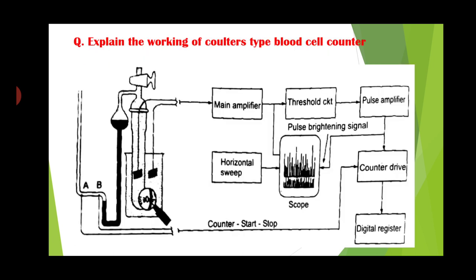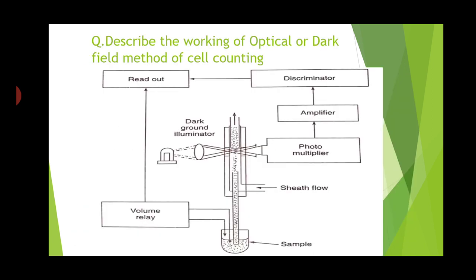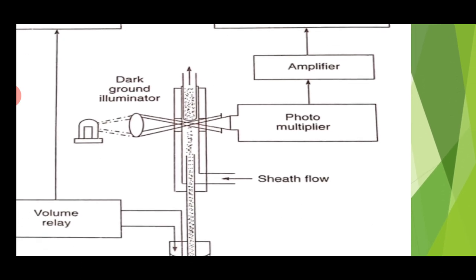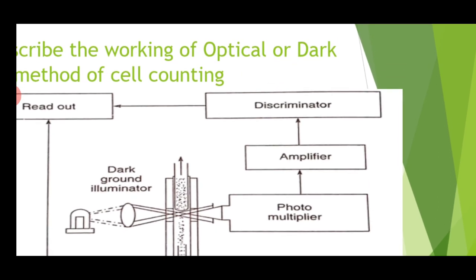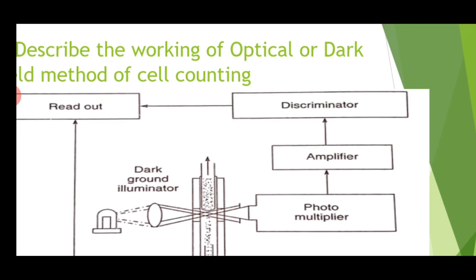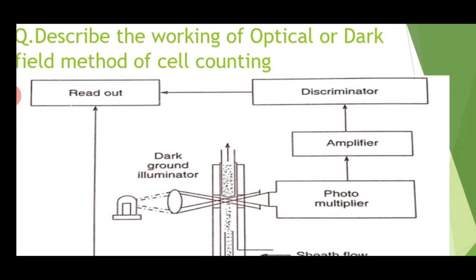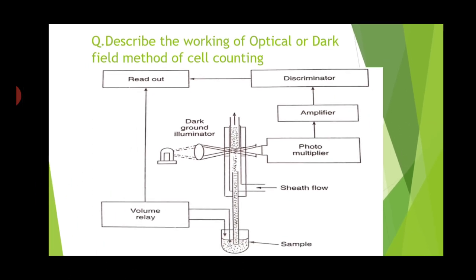The discriminator provides pulses of equal amplitude which are used to drive a digital display. From the photomultiplier you get electrical pulses; in the amplifier they are amplified. In the discriminator, only pulses having the same amplitude pass through while the remaining pulses are rejected. Using these pulses the counter is clocked, and automatically the count increments. In this way we get the counting of the cells.